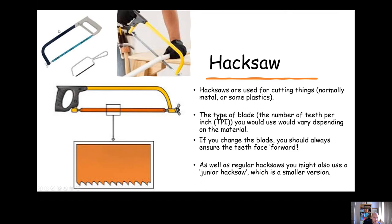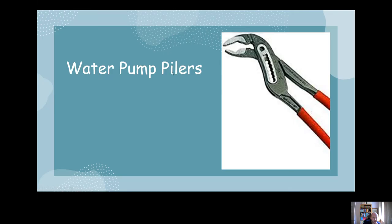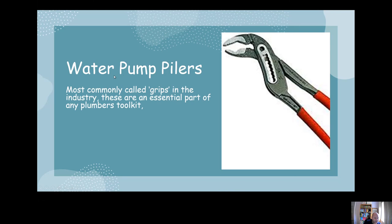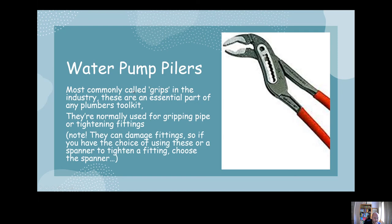There's also as well as a big hacksaw, there's also a junior hacksaw which is a smaller version. Water pump pliers - very useful tool. I always used to call them grips but the proper name for them are water pump pliers. They're essentially used for gripping pipe or tightening fittings normally. If you are going to be tightening up, say for example, compression fittings, you're probably better off using a pair of spanners rather than water pump pliers because the water pump pliers can damage the fittings if you're not really careful with them because they've got the teeth on them.